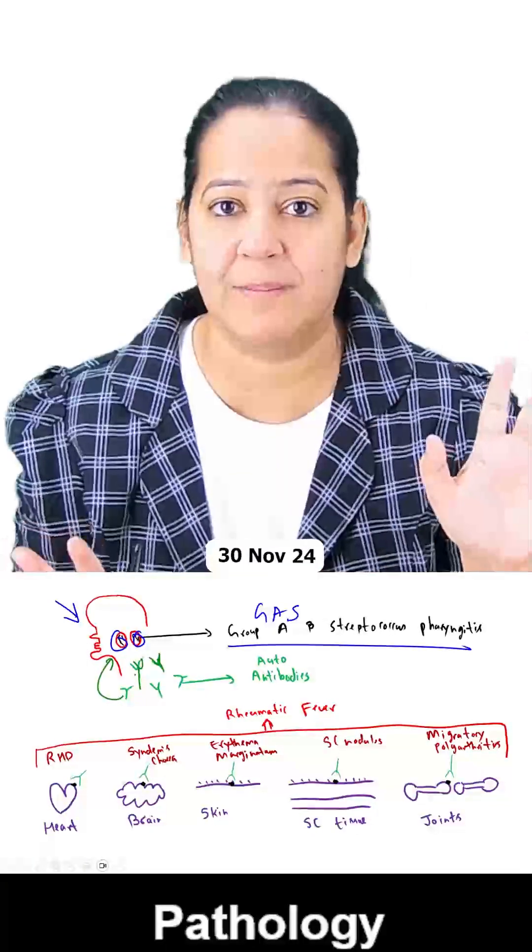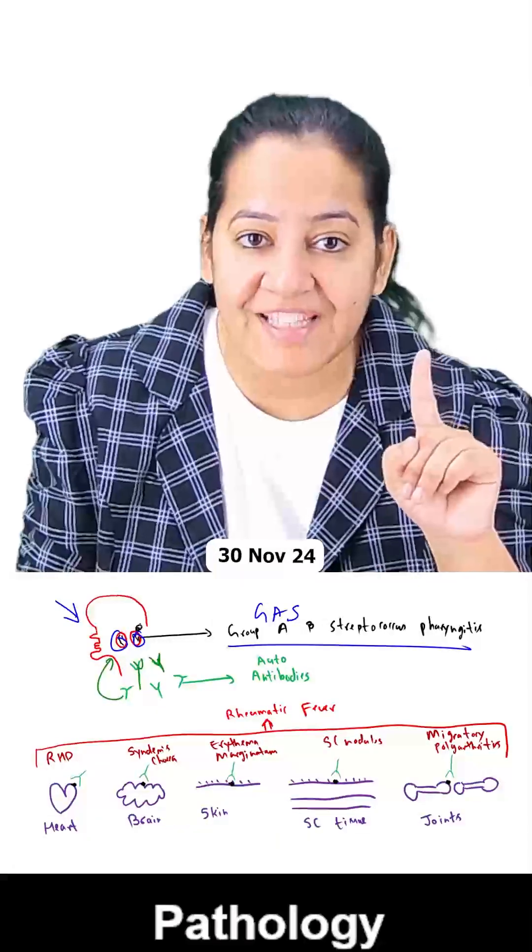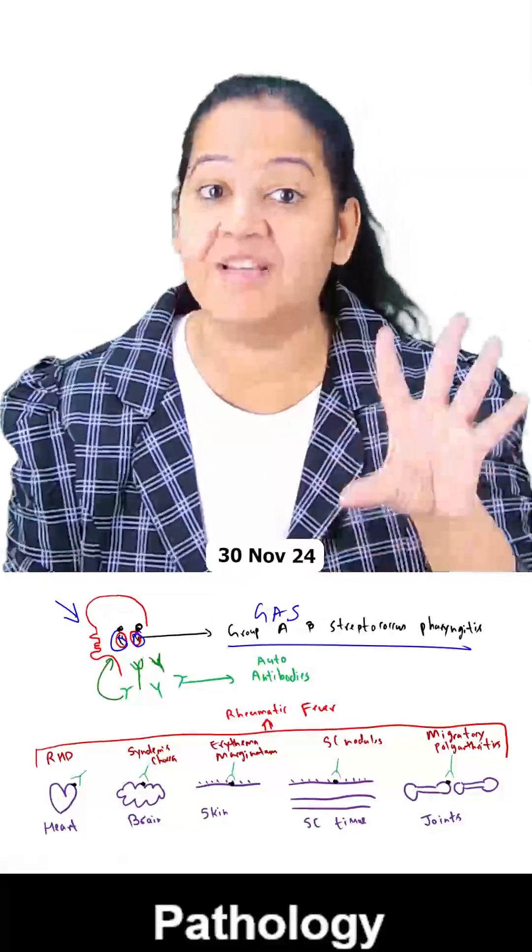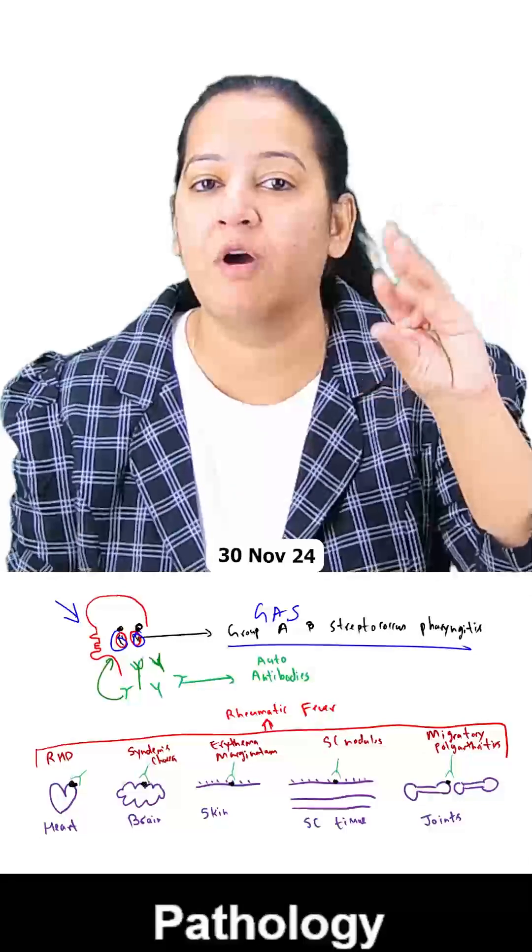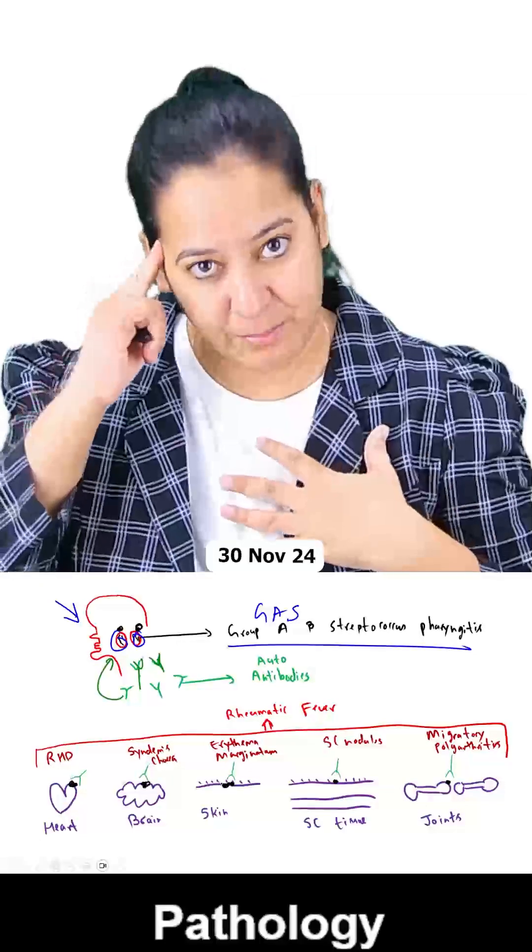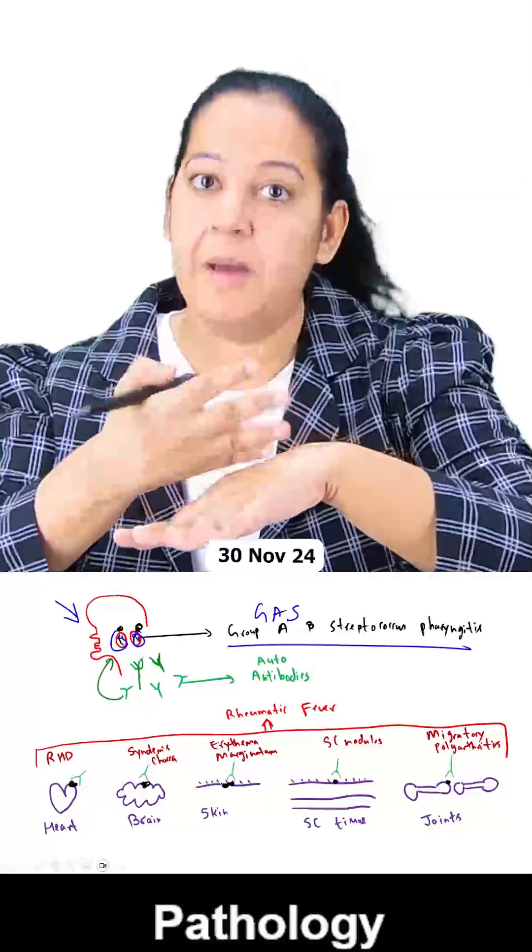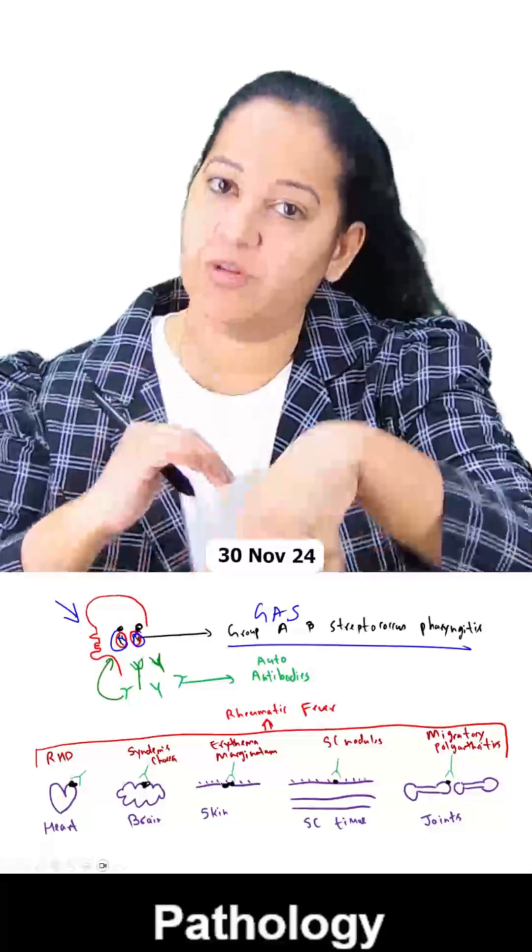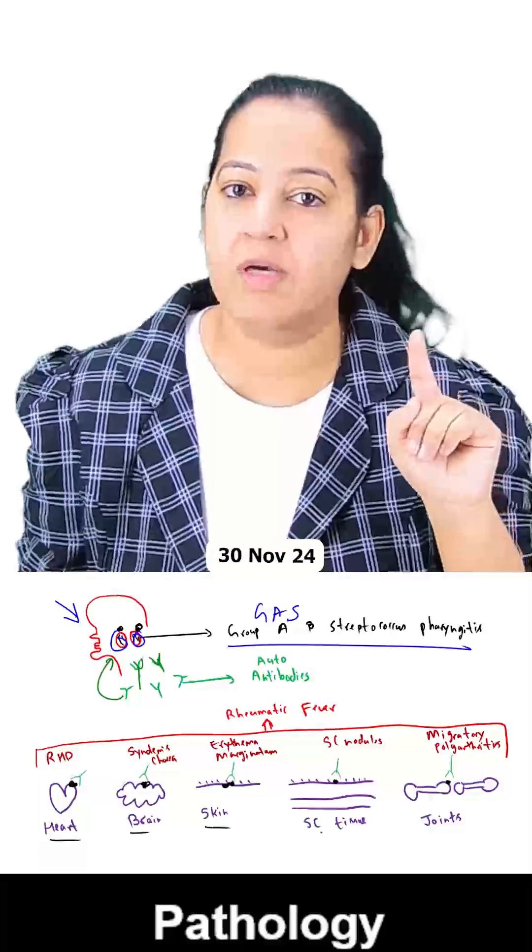The similar antigen is present on five human organs. What are the human five organs? Brain, heart, skin, below the skin is subcutaneous tissue, and below that are joints. So these are the five organs on which the similar antigen is present.